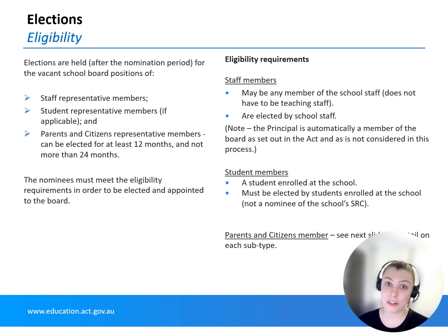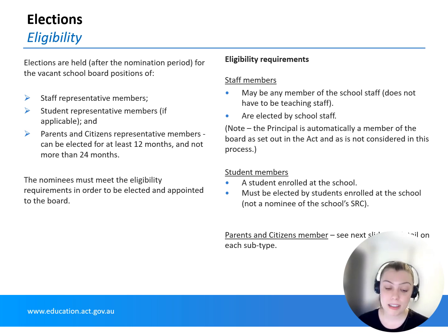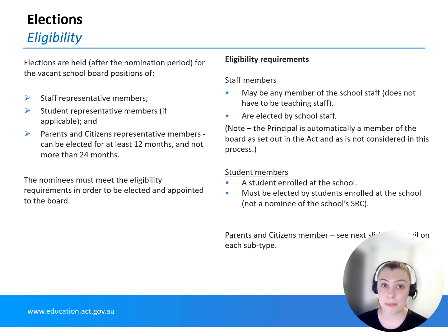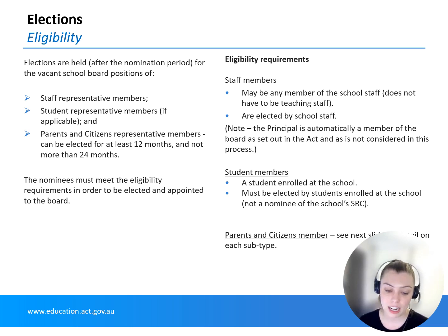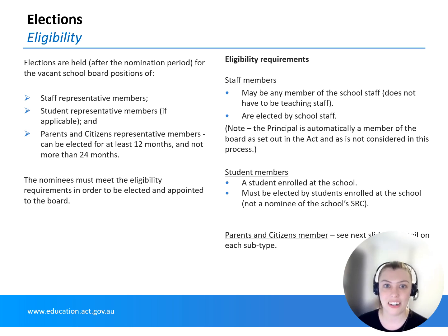There are some eligibility criteria to meet in order to nominate for particular positions on the school board. Staff members must be currently employed as a member of staff of the school, and this applies to all staff including casual employees. Student members, where applicable — only for certain high schools and colleges — must be a current student who attends classes or participates in an education program conducted by the school for at least 12 hours per week.